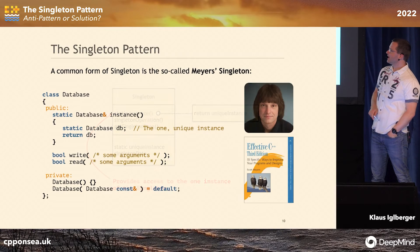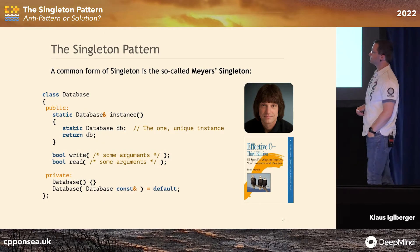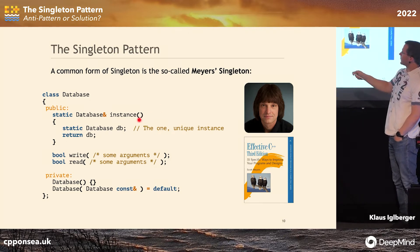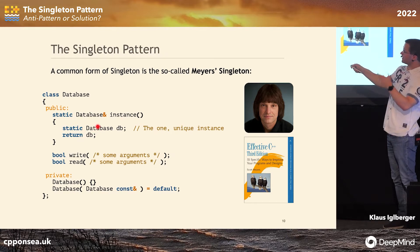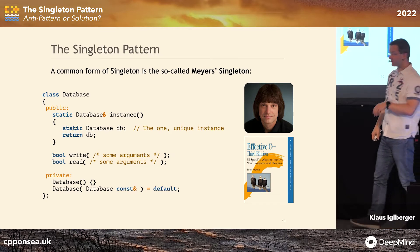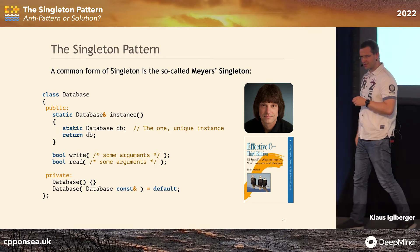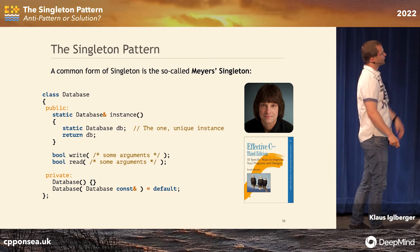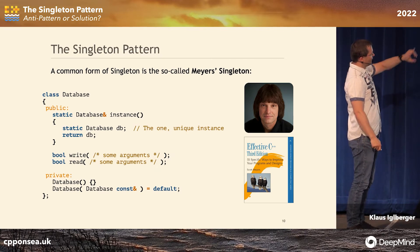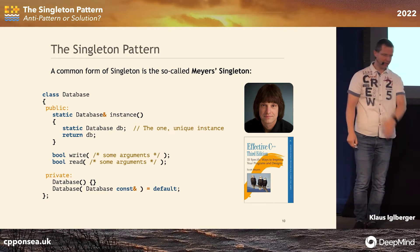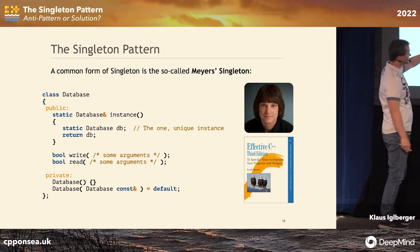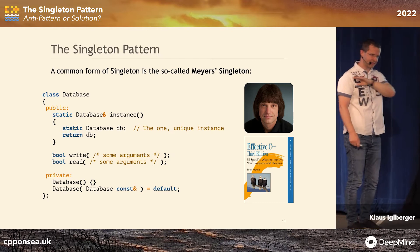Recall this is a book from 1994 — not exactly what we do today. The most common form used today is the so-called Meyers Singleton. This is an example with some database class. The instance function contains a static local object — the one thing that needs to be created. The good thing about the Meyers Singleton is that it's initialized properly, and since C++11, even in a thread-safe way. It's also properly destroyed at the very end of your program. All constructors — copy, default — are not available, so truly the only instance you can get is through the instance function.